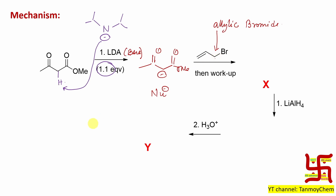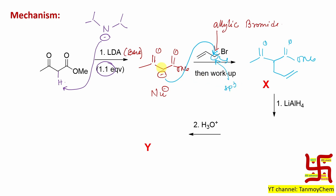This molecule can participate in the SN2 reaction efficiently. The carbanion will attack here, and bromide will leave. So this carbon will be attached here. By the way, this carbon's hybridization is SP3 — do not get confused. The active methylene compound is attached here at the SP3 carbon.